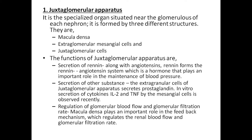Along with angiotensin, renin forms the renin-angiotensin system, which is a hormone that plays an important role in maintenance of blood pressure. Secretion of other substances — the extraglomerular cells of the juxtaglomerular apparatus are responsible for secretion of prostaglandin.